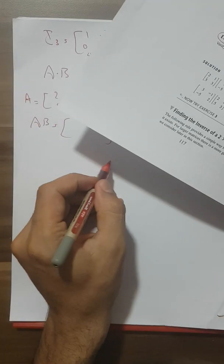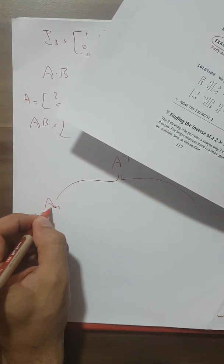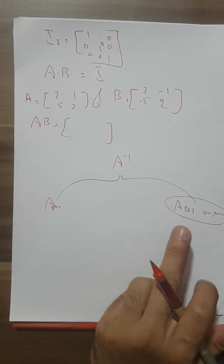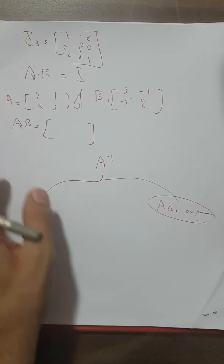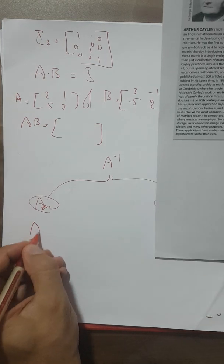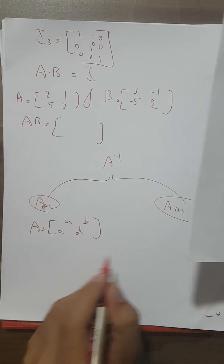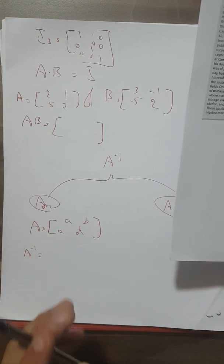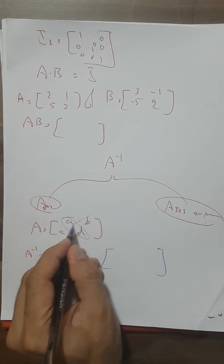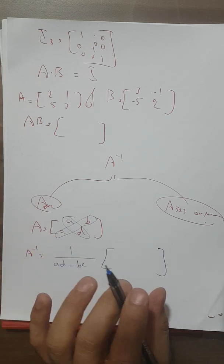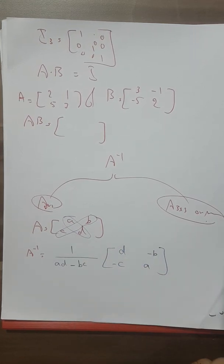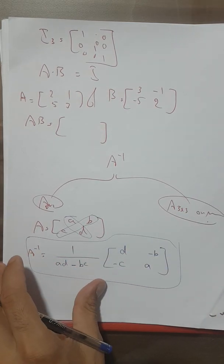For finding the inverse: if A is 2×2, it is easy; if A is 3×3 or larger, it needs more work. For a 2×2 matrix A = [a,b; c,d], the inverse formula is: A⁻¹ equals one over the main diagonal product ad minus the off-diagonal product bc, then swap the main diagonal elements and multiply minus one to the off-diagonal elements.